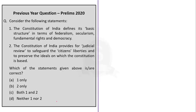Important points related to the Gandhi-Irwin Pact are displayed on the screen. Now let us move on to the next question from the static portion of polity. These kind of factual questions are easy to score, so aspirants should make maximum use of them. Last year, around 20 questions were asked from polity, so practicing a lot of polity questions will be beneficial. Consider the following statements: Statement 1 — The Constitution of India defines its basic structure in terms of federalism, secularism, fundamental rights and democracy. Statement 2 — The Constitution of India provides for judicial review to safeguard citizens' liberties and to preserve the ideals on which the Constitution is based.